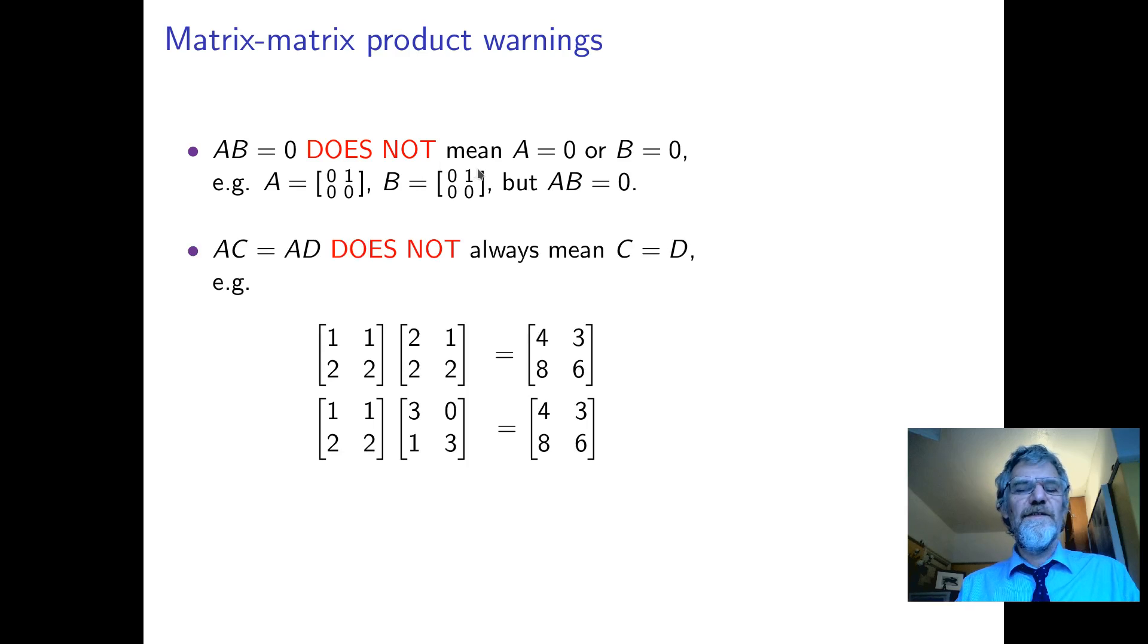This sort of means that you can't necessarily divide by matrices. You also can't cancel, which is part of the same thing. In other words, AC equals AD does not necessarily mean C equals D. It arises when something's kind of lost in multiplying by A, so it's not really seeing the whole of C or D.